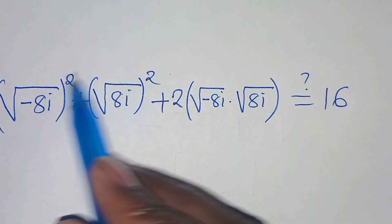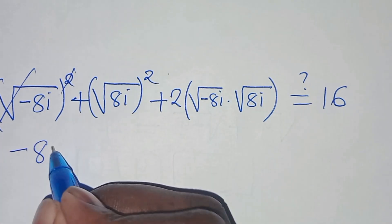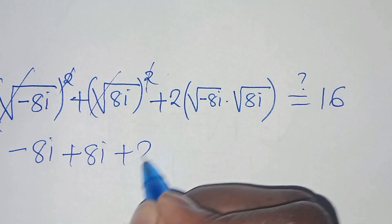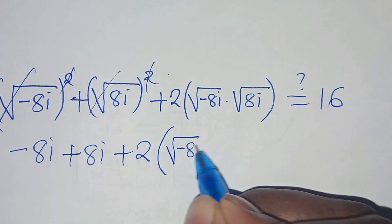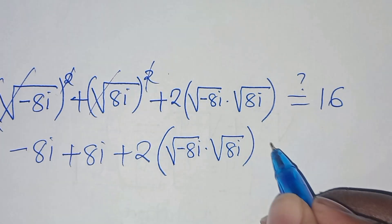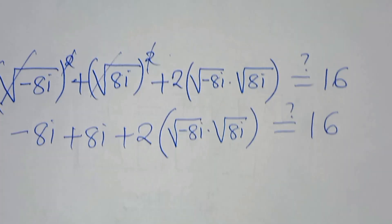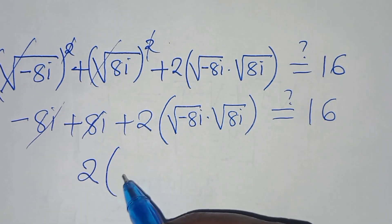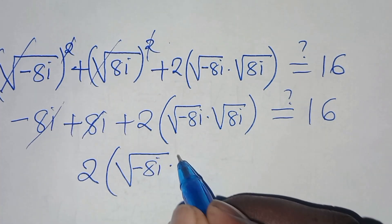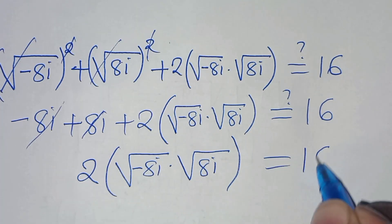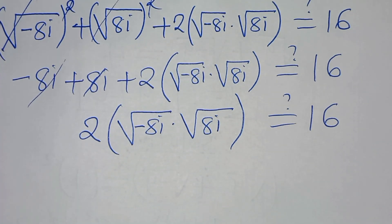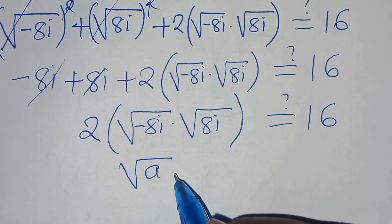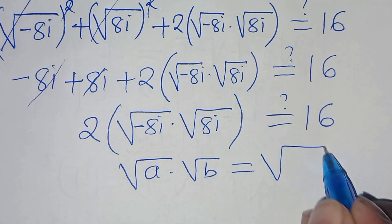Eliminating the square root signs: minus 8i plus 8i simplifies to zero, leaving 2 times the square root of minus 8i times square root of 8i equals 16. The expression square root of minus 8i times square root of 8i is in the form square root of a times square root of b, which equals square root of a times b.